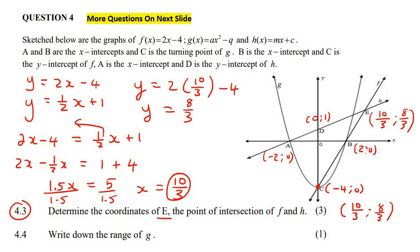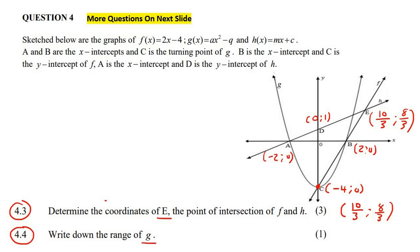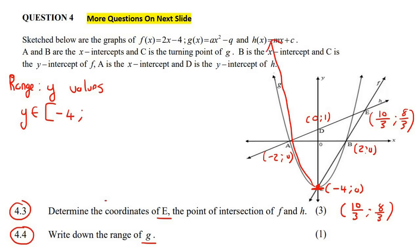Next question: write down the range of G. G is the parabola. Remember that range is the Y values. You go from the smallest to the largest: the smallest Y value on that parabola is minus four, and then it goes up to infinity. In interval notation that's from minus four to infinity, and in set builder notation you'd say Y is any number bigger than or equal to negative four.